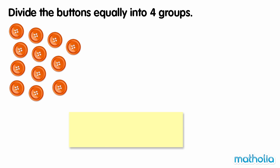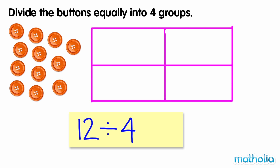Divide the buttons equally into four groups. There are twelve buttons. We need to divide the buttons equally into four groups. Let's draw four empty groups and then place one button into each group until we have used all of the buttons.